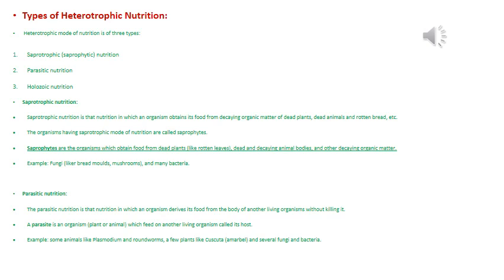A parasite is an organism — plant or animal — which feeds on another living organism called the host, and the host may also be a plant or animal. Parasitic mode of nutrition is observed in several fungi, bacteria, and also in plants like Cuscuta. Cuscuta is commonly known as 'amar bale' in local language. Another common example is Plasmodium, which causes malaria.